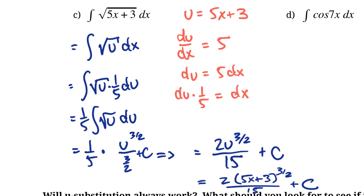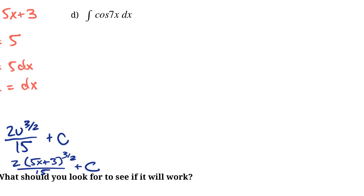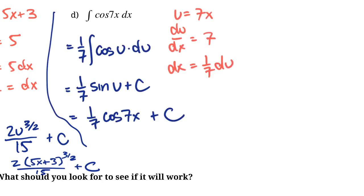Some of you may have been able to figure out this integral without doing all the substitution steps, but it will get more complicated, so you do have to know how to do this. Here's another case where I want you to pause the video and try it yourself using u-substitution. The substitution I made is u = 7x. Taking the derivative gives du/dx = 7, so rearranging: dx = (1/7) du. I plugged it back in, moved the 1/7 outside the integral, and took the integral — the integral of cos(u) is just sin(u), because the derivative of sin is cos. Then I re-plugged in u as 7x. That's the answer.